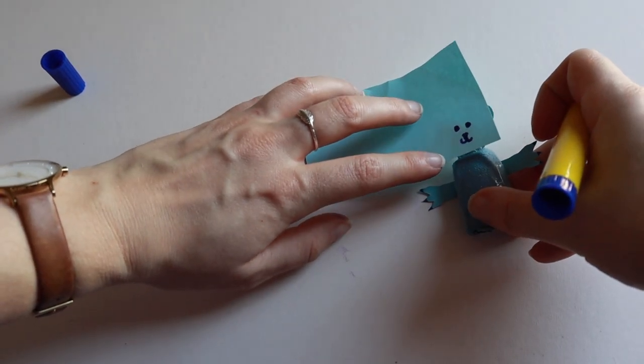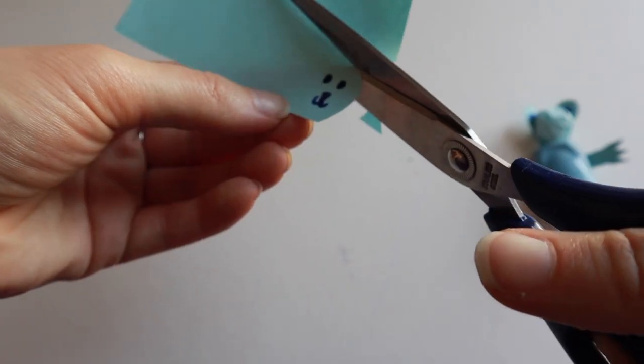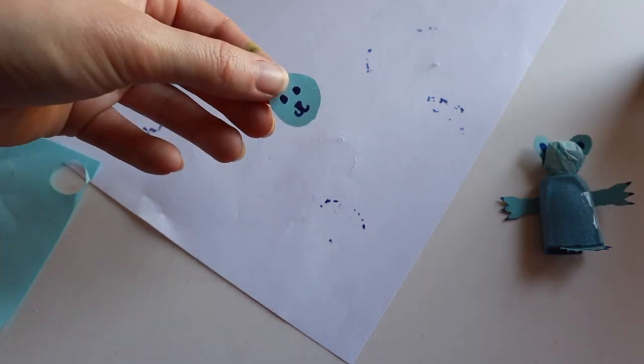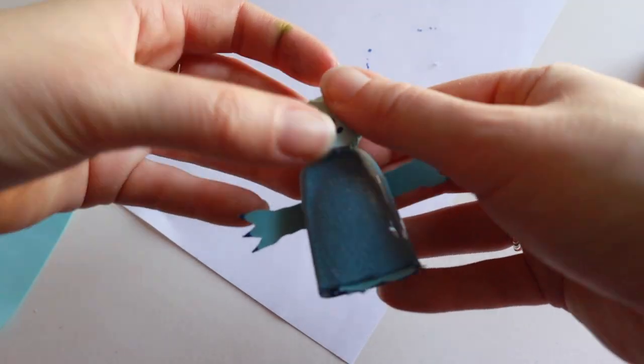If you're doing this method, make sure it's the right size and then cut it out. Put a dab of glue onto the back and then stick it to your head. This might take a bit of fiddling to get it in the right place.